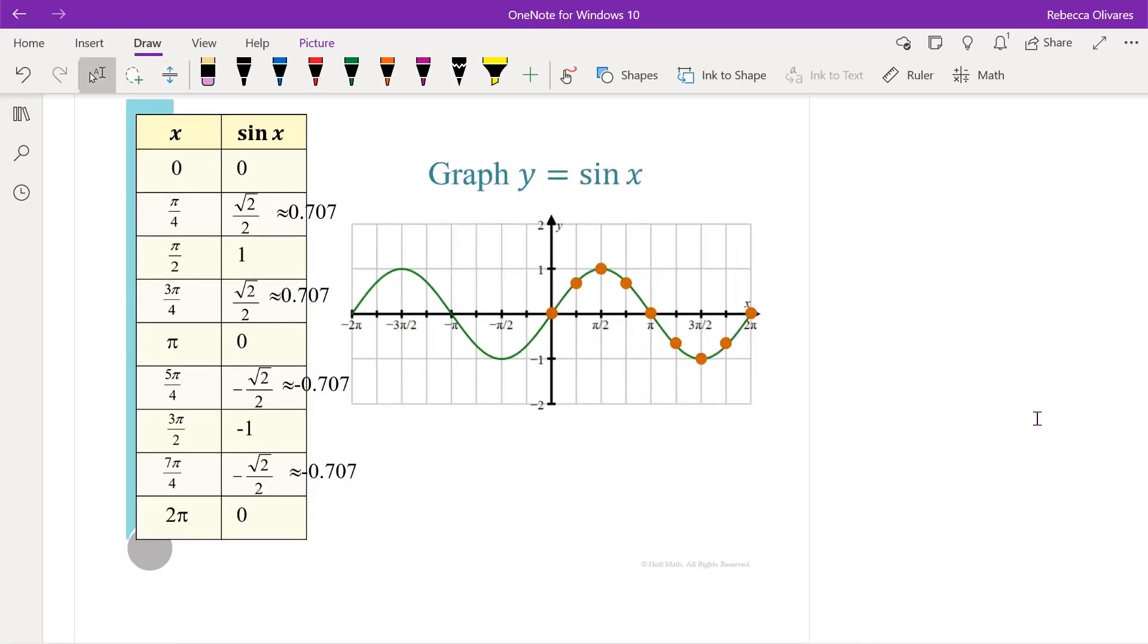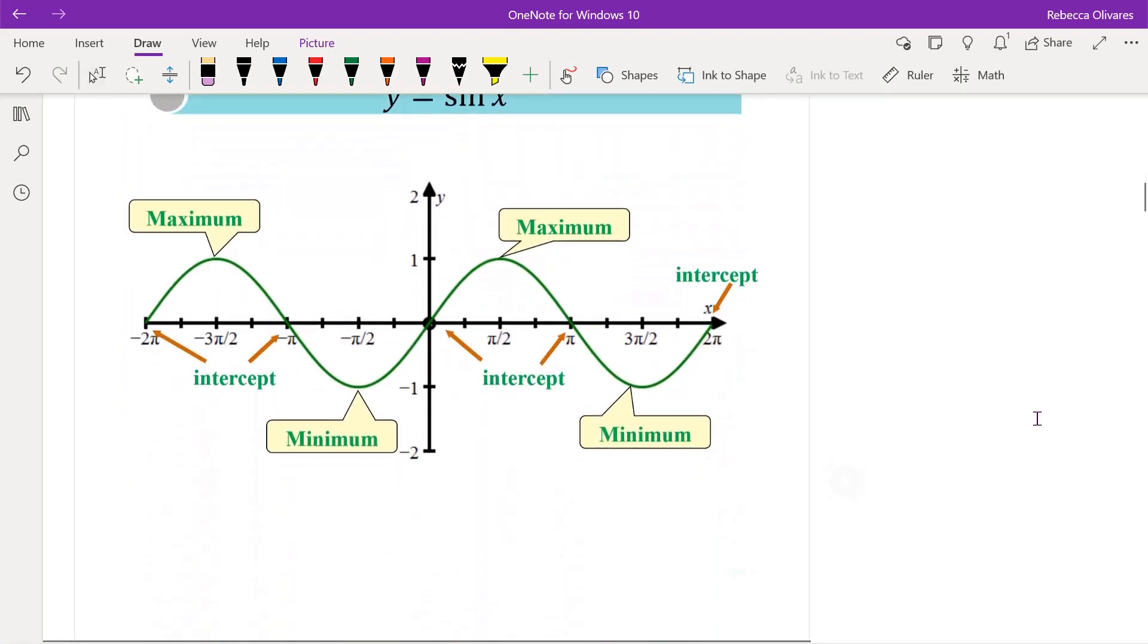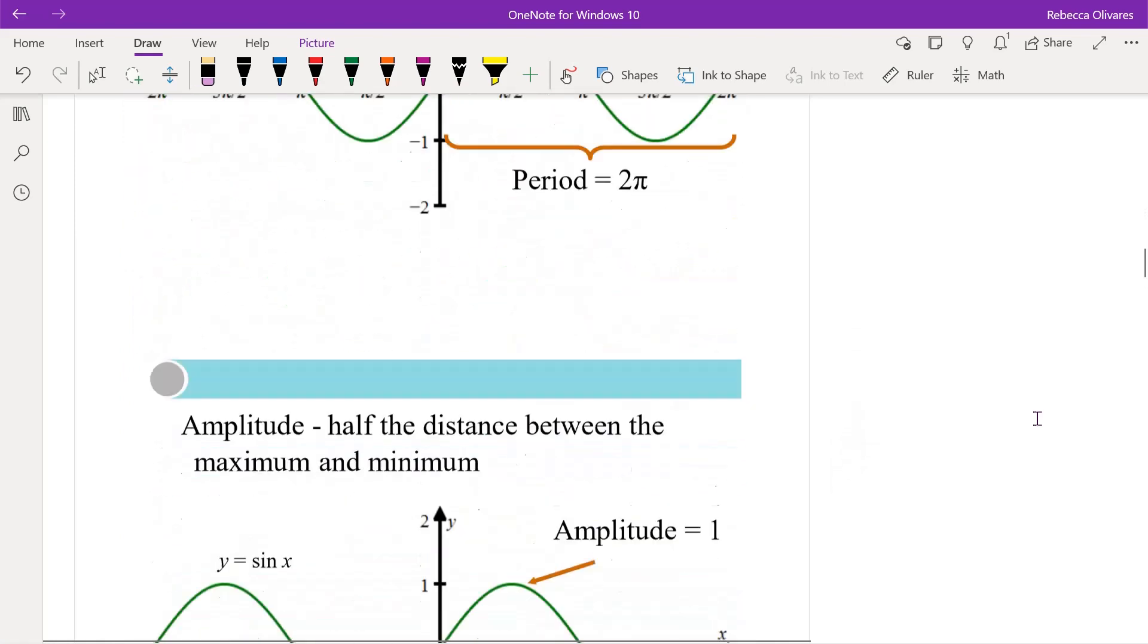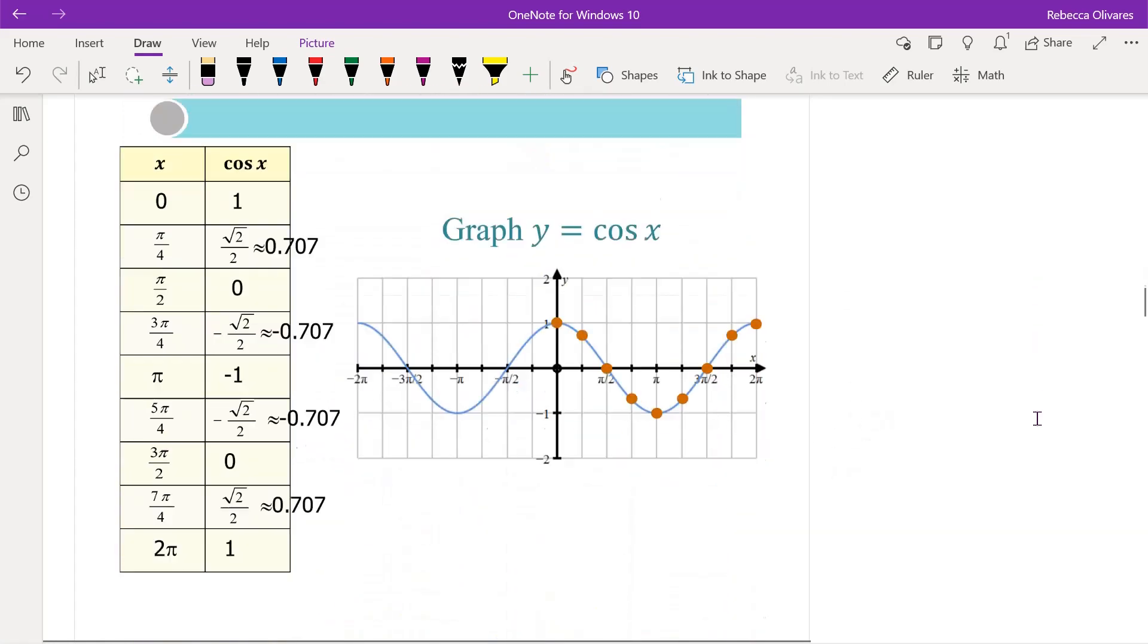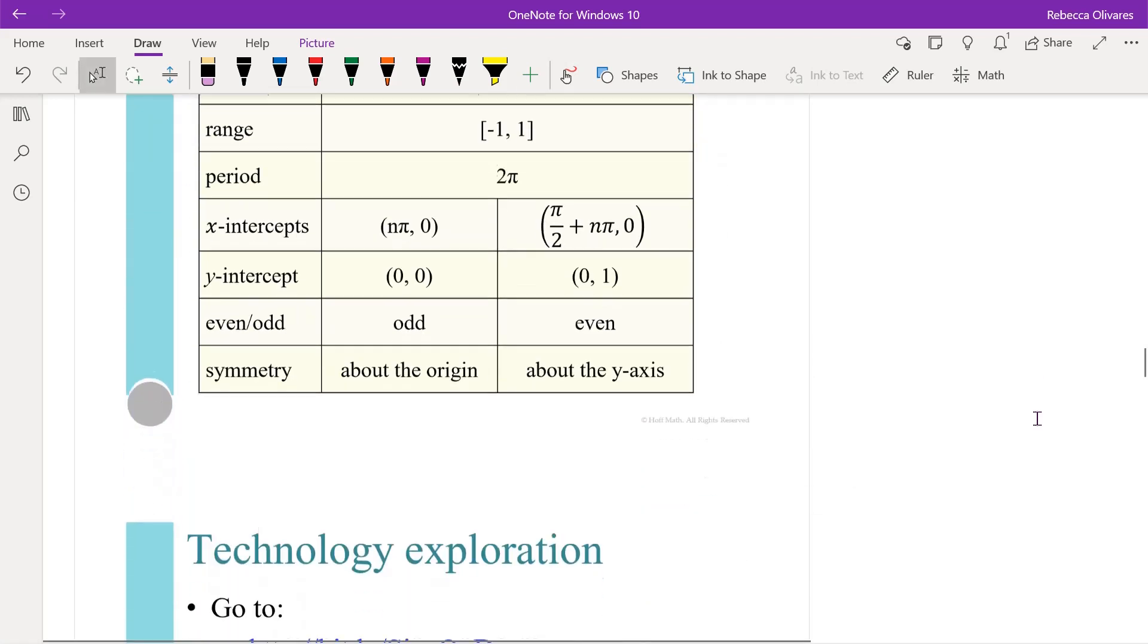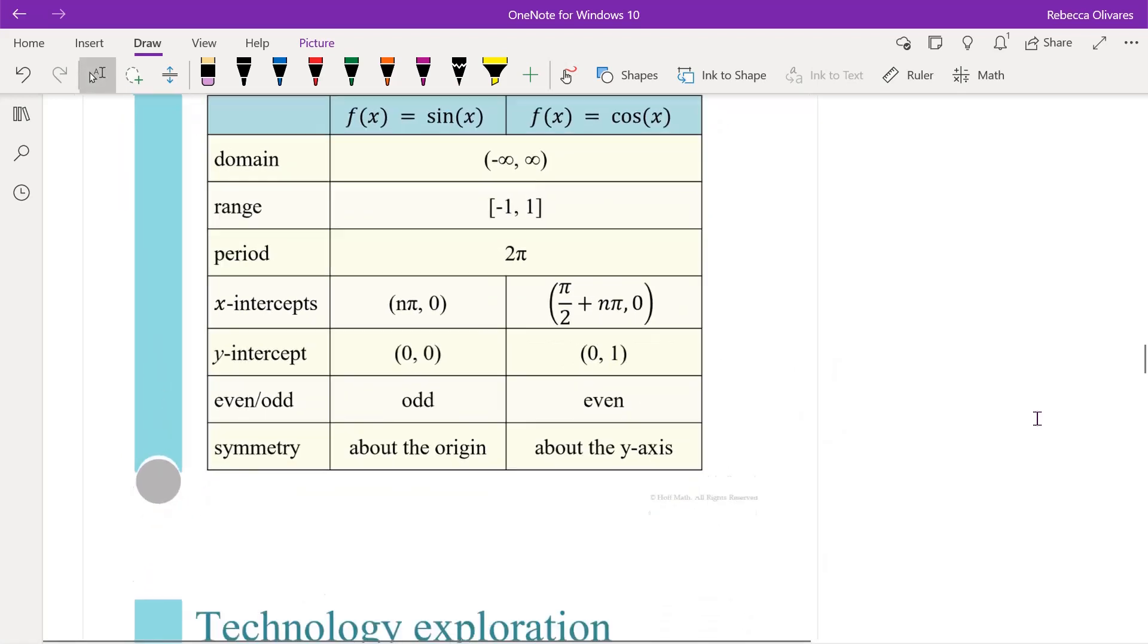Then we go through the connection between the unit circle and the graph. We talk about max and min, we talk about a periodic function, we talk about the period, the amplitude. Cosine is the same thing—we go through these things as far as domain, range, period, etc.